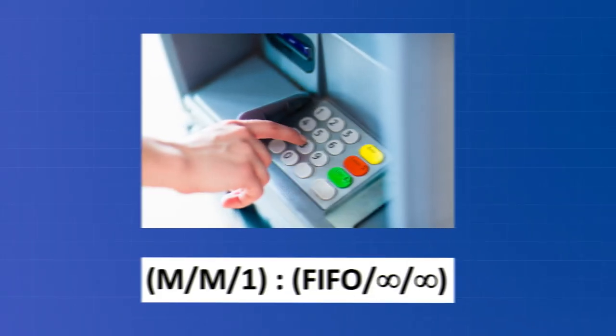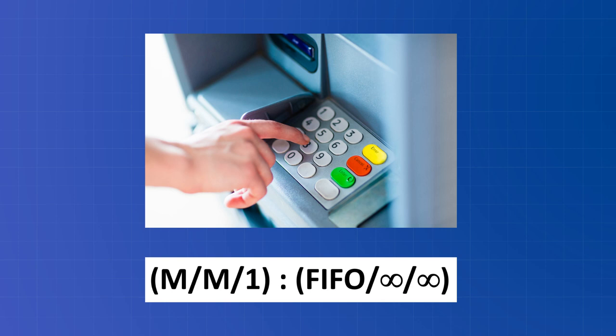For example, think of an ATM. It can serve one customer at a time in a first in first out order, with a randomly distributed arrival process and service distribution time, unlimited queue capacity and unlimited number of possible customers. Queuing theory would describe this system using Kendall notation as M/M/1/FIFO/∞/∞.